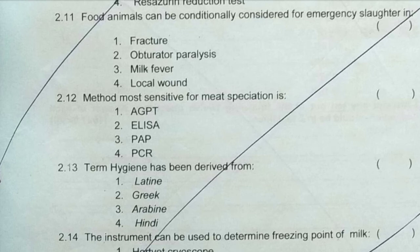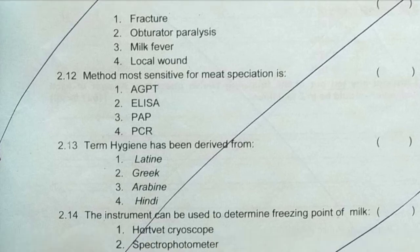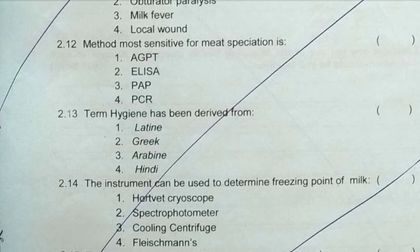Next question: method most sensitive for meat speciation is — we know the best and most advanced method is PCR, so the answer is the fourth option. Next question: the term hygiene has been derived from — the Greek word 'Hygia,' meaning goddess of health.